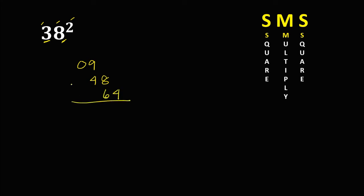Then the square of the second digit — the square of 8 is 64. Adding: we have 4, then 8 plus 6 is 14, so 4 carry 1, then 1 plus 9 plus 4 is 14, carry 1, and 1 plus 0 is 1. Therefore, 38 squared is equal to 1,444.